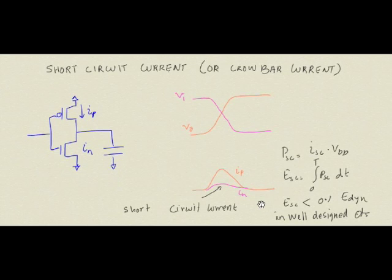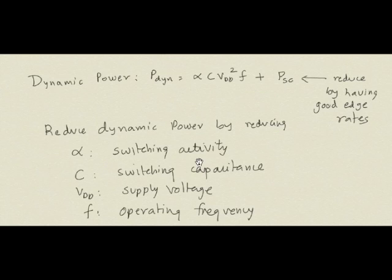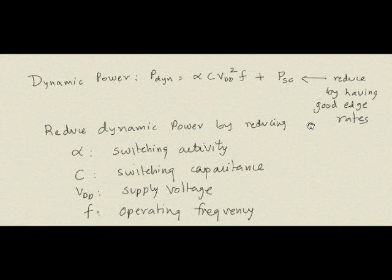The short-circuit power is associated with dynamic power — it only occurs when things are switching. So the total dynamic power is alpha·(CV²F + P_SC). If there is no switching, there is no short-circuit current, so alpha should bracket both terms.